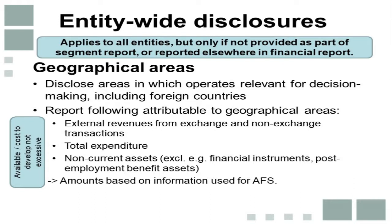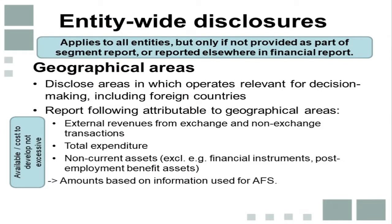The last key principle is entity-wide disclosures, which applies to all entities. However, if the information is already provided as part of a segment report or elsewhere in the financial report, it does not need to be presented again. The requirement is for geographical information to be disclosed for the different areas the entity operates in that are relevant for decision making, including foreign operations or foreign countries. The information to be reported includes external revenues from exchange and non-exchange transactions, total expenses, and information on non-current assets per geographical location, based on amounts included in the financial statements — but only when available or determinable without undue or excessive costs.